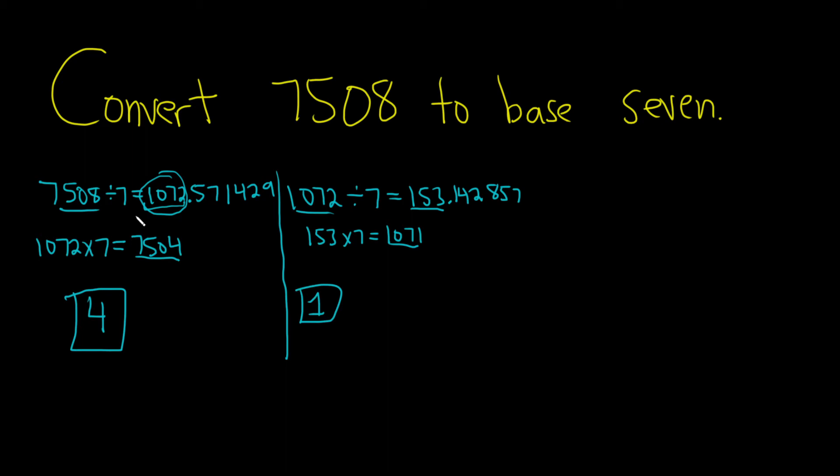So you see the process is not so bad once you get it. So you divide by the number, take this, multiply it by 7, subtract, get your remainder. Take this number, divide by 7, take the whole number part, multiply it by 7, subtract, get your remainder. Let's do it again.